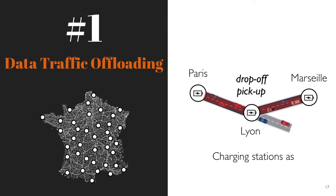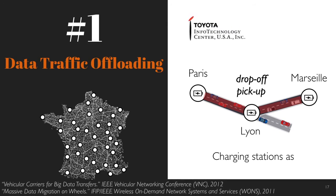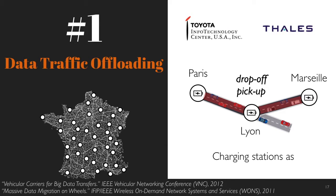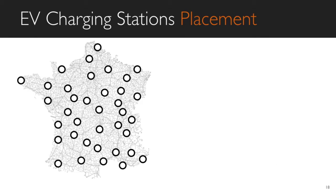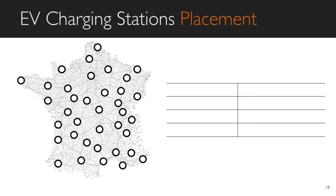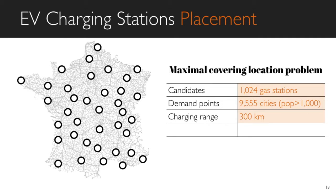The charging stations act as data exchange relay points where data is dropped off for later pickup by other vehicles for final delivery, in our case to Marseille. This work was initiated in the framework of a research grant from Toyota ITC in California, with Thales joining later. Our first objective was to assess the capacity enhancement brought to the internet by carrying data on private vehicles during their daily trips. We proposed the deployment of a realistic charging station placement for France, assuming that charging stations may be co-located with existing gas stations in France, providing 1,024 candidate locations.